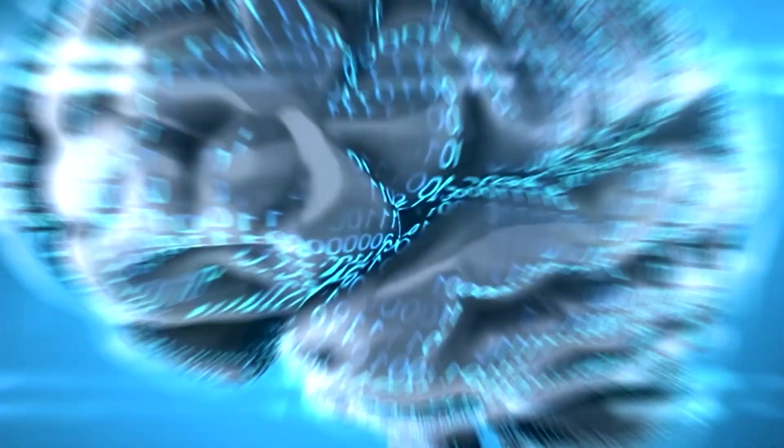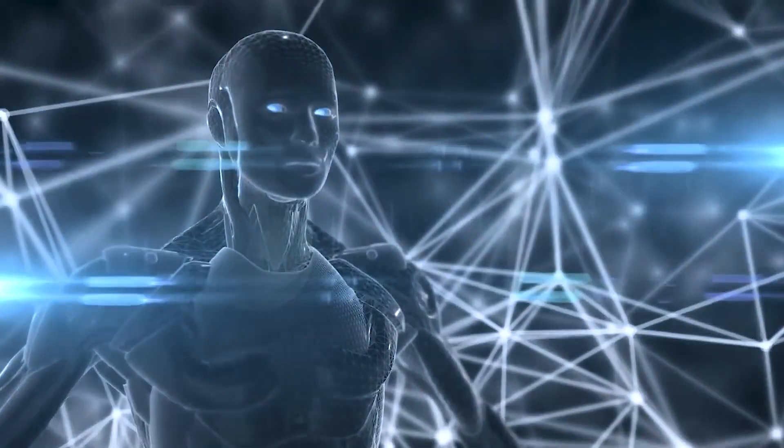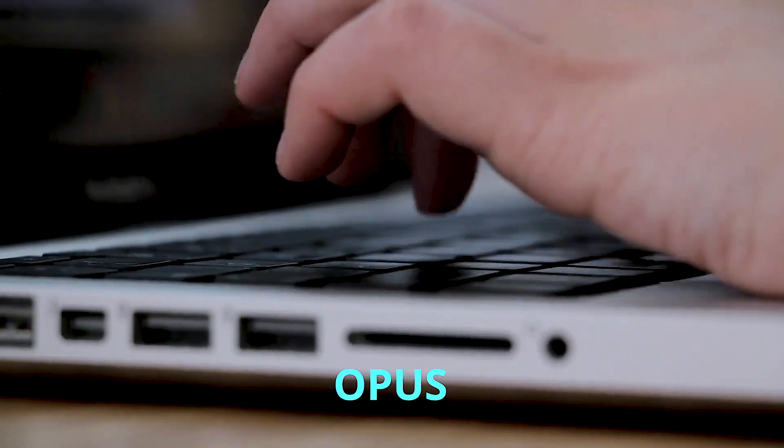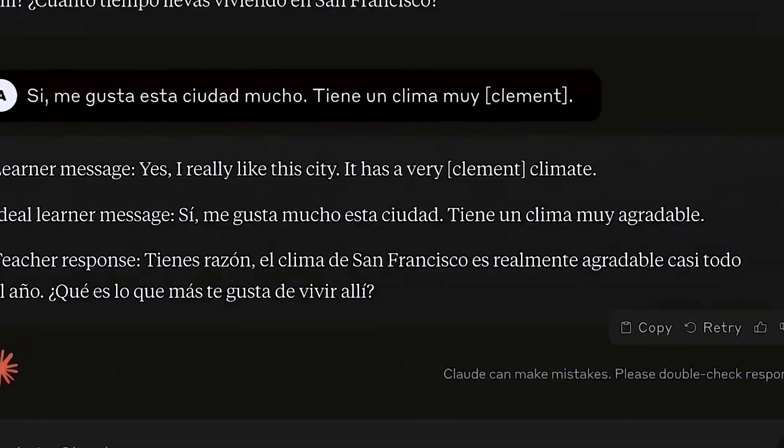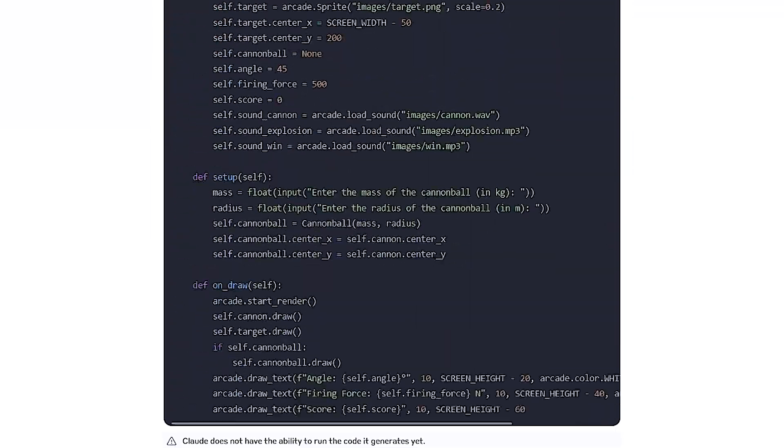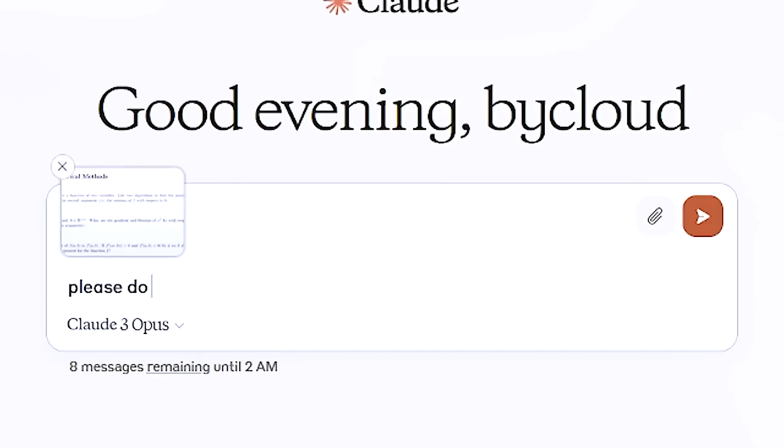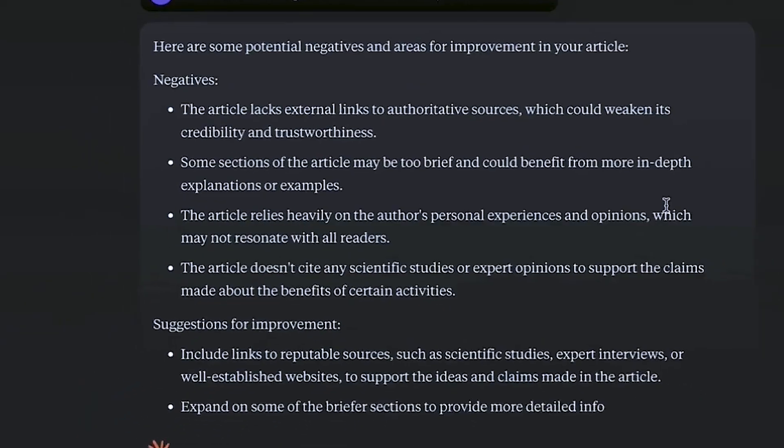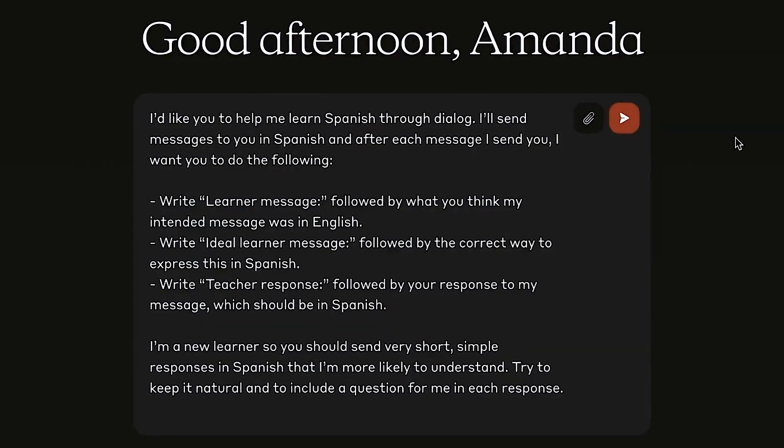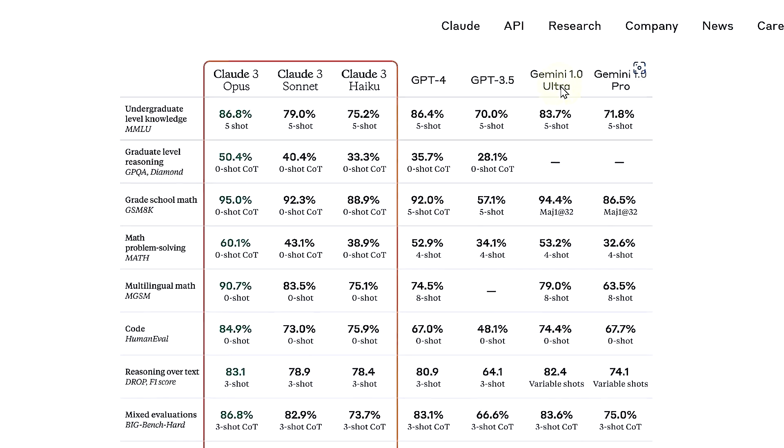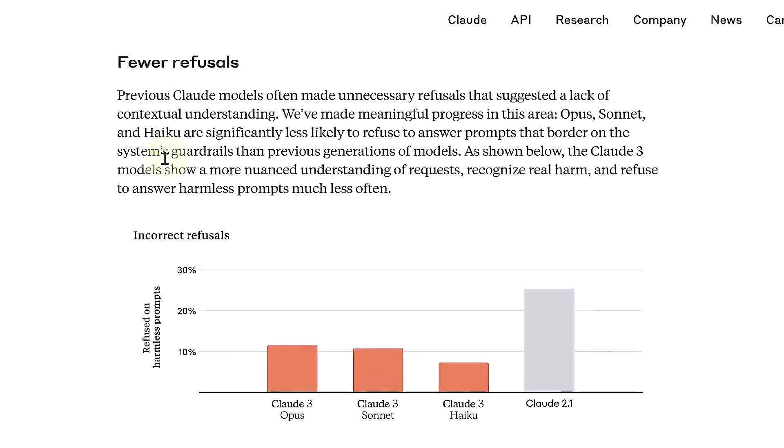Among these, Claude 3 Opus stands out as a true tour de force, setting new standards for AI intelligence and performance. At the heart of Opus lies a level of proficiency that transcends mere language comprehension and generation. This flagship model boasts unparalleled capabilities across a wide array of disciplines, ranging from undergraduate and graduate level knowledge to expert reasoning, mathematical problem solving, and nuanced content creation.